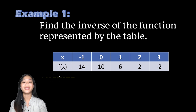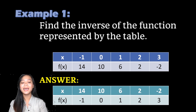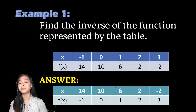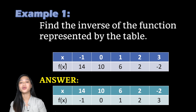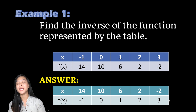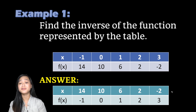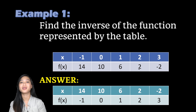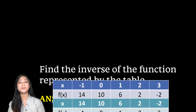So the answer: the x-values of the inverse become 14, 10, 6, 2, and negative 2 — these were the previous f(x) range values. The f(x) values of the inverse become negative 1, 0, 1, 2, and 3. As you can see, the inverse function is simply an interchange of the domain and range values from the original table. Now let's look at another example.